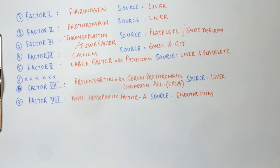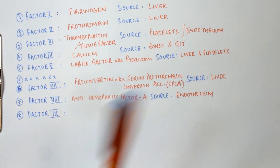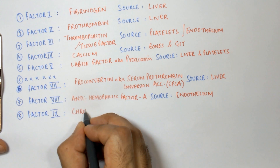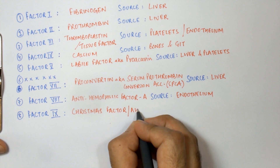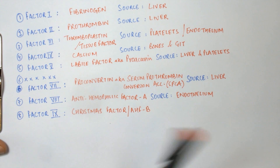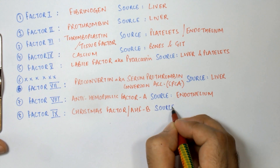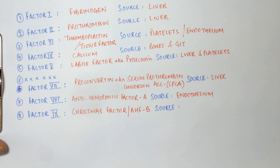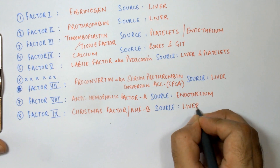The deficiency of factor number eight results in classic haemophilia. Factor number nine is known as the Christmas factor, also known as antihaemophilic factor B, and the source of factor number nine is the liver.